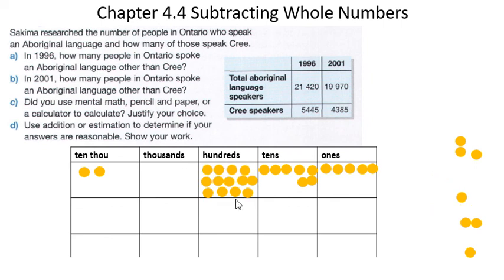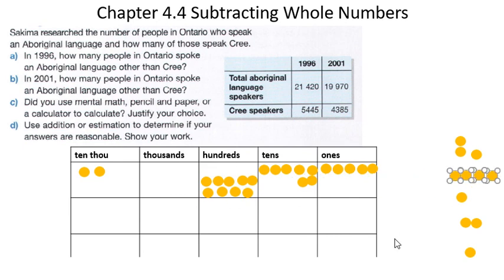So here I have my thirteen hundreds, and I've got to remove four hundreds — one, two, three, four. Let's remove four of them.